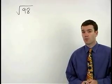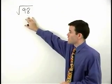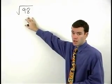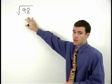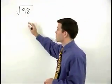To simplify a square root where the number inside the radical is not a perfect square like the square root of 98, we start by making a factor tree for the number inside.